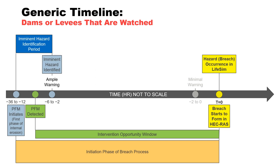The team will need to discuss whether there is ample warning, typically minus six to minus two hours, or minimal warning, typically minus two hours to zero hours, based on the failure mode and other site-specific factors. Since these times are relative to time zero when the breach starts to form, they are also negative values.